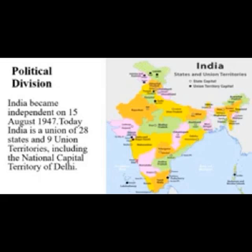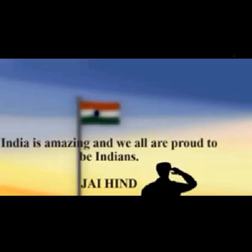We studied about the land boundaries and water boundaries. Next, we are going to see about the political divisions. India became independent on 15th August 1947. Today, India is a union of 28 states and 9 union territories. We will see them one by one in the next classes. India is amazing, and we all are proud to be Indians.